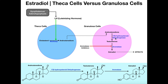The granulosa cells have two additional enzymes. The first enzyme is called 17-beta-hydroxysteroid dehydrogenase. This is going to convert androstenedione into testosterone. Females do have a little bit of testosterone, nowhere near as much as males. Interestingly, testosterone is the direct precursor to estradiol, the major estrogen. That's what we get by the action of 17-beta-hydroxysteroid dehydrogenase on androstenedione — we get testosterone.